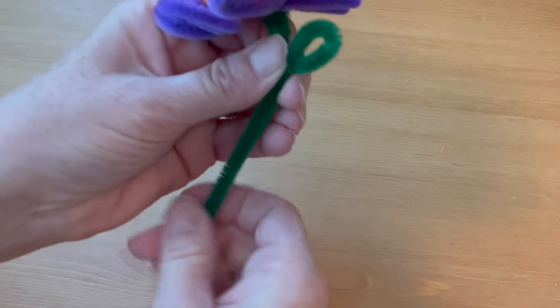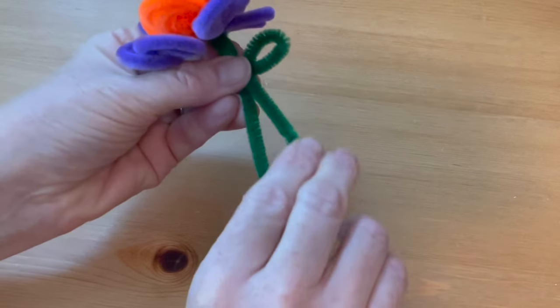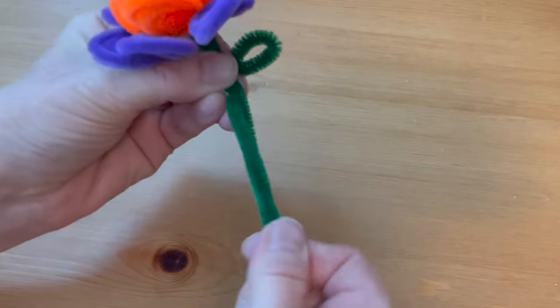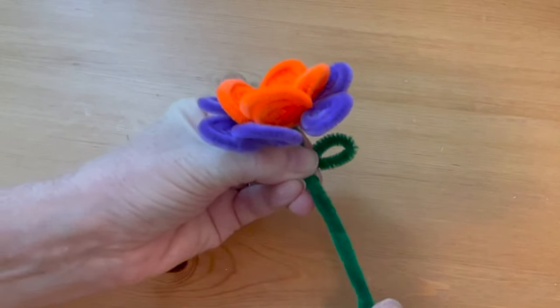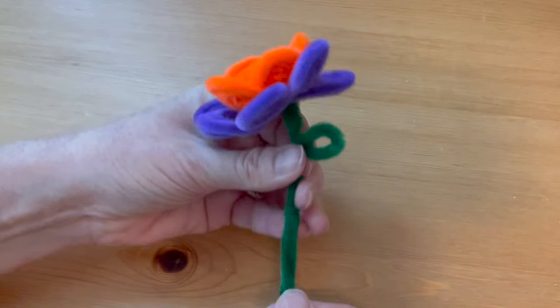You can leave the flower like this with a long stem. I like to make mine a little sturdy, so I'm going to fold it up until the tip meets the end of the yellow stem. Twist the folded pipe cleaner together so that it's nice and secure and sturdy.